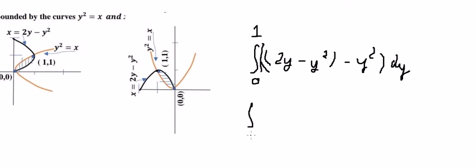So we got the interval from 0 to 1. So we got 2y minus 2y squared dy.